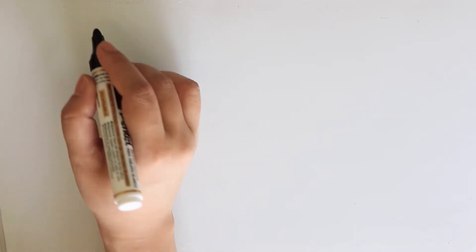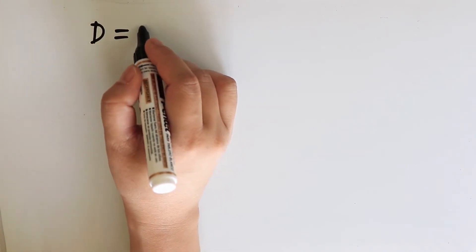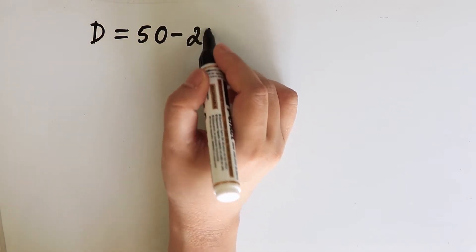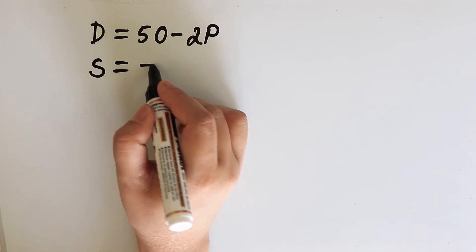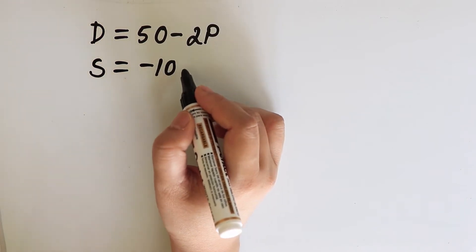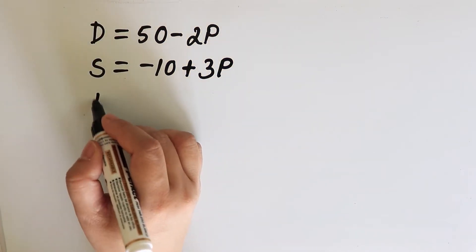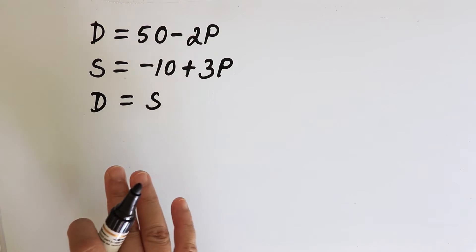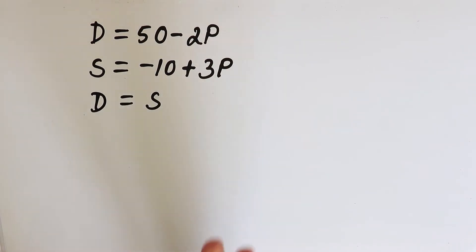Let us consider the market model: D is equal to 50 minus 2P, S is equal to minus 10 plus 3P, and D is equal to S. Let us now find the equilibrium price and quantity using the matrix method.